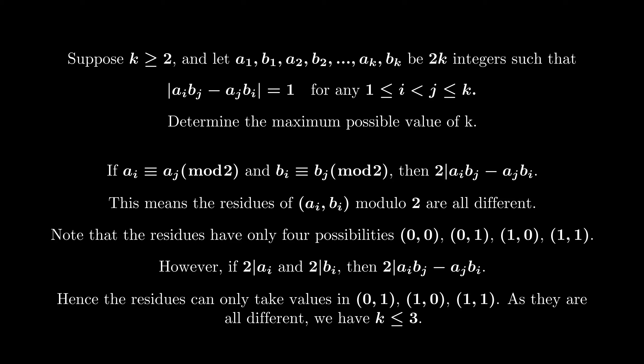If you are not fully convinced by the last step, you can apply pigeonhole theorem with k larger than 4 and we will see that two of the pairs must have the same residue, which contradicts to what we know.